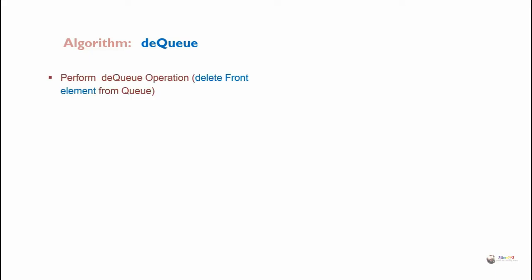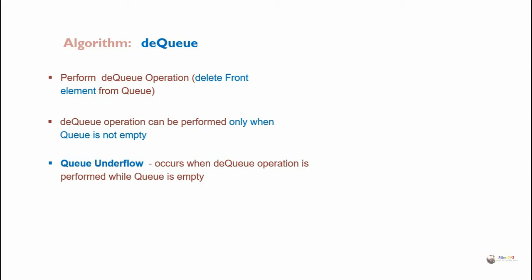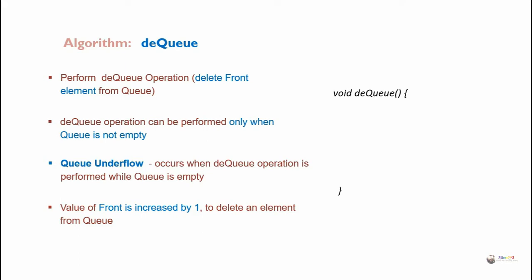For the dequeue operation, the front element is deleted from the queue. Dequeue can be performed only when the queue is not empty. Queue underflow occurs when dequeue is performed while the queue is empty. In the dequeue algorithm, first check isEmpty; if empty, the condition is queue underflow. Else, increment the value of front by one (front++).